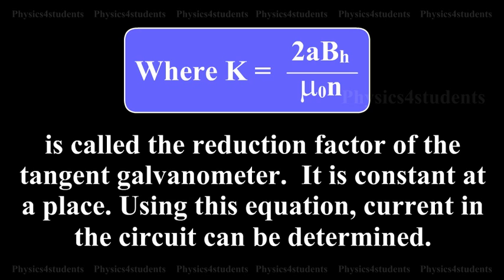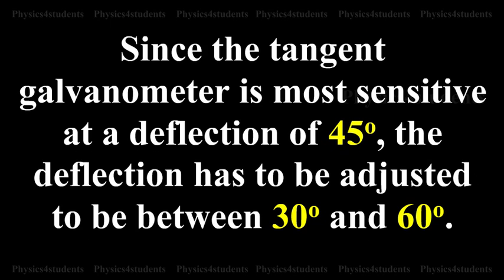Since the tangent galvanometer is most sensitive at a deflection of 45 degrees, the deflection has to be adjusted to be between 30 degrees and 60 degrees.